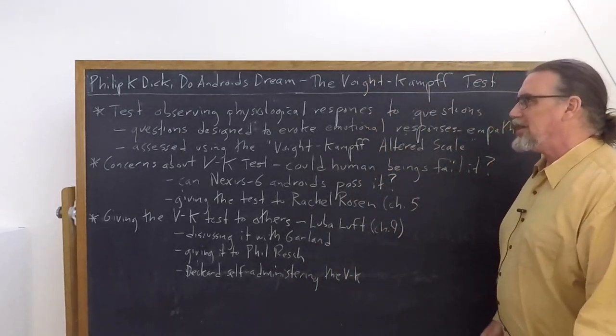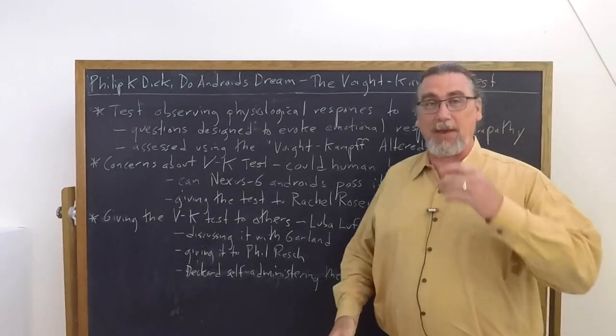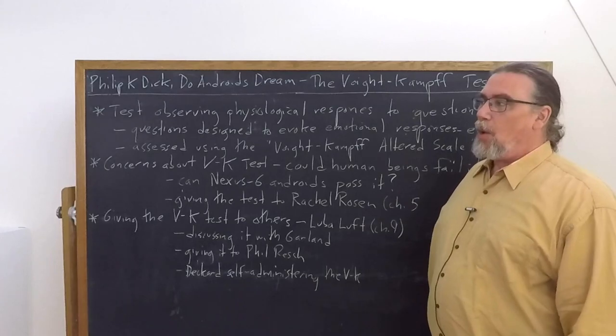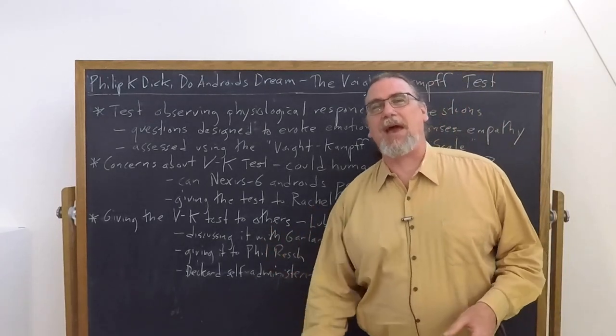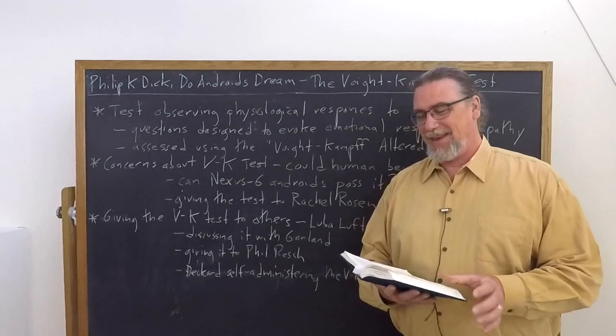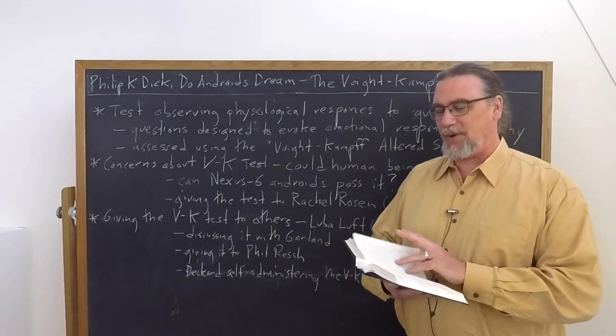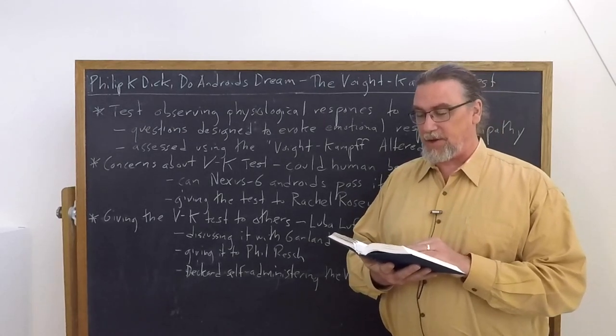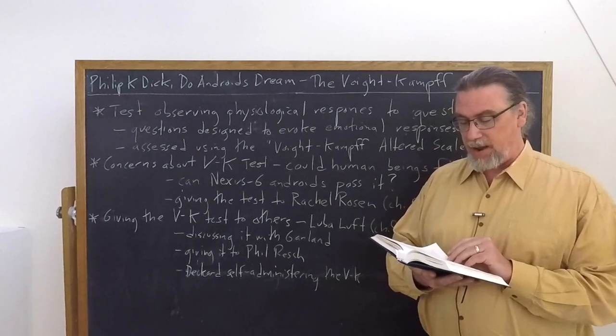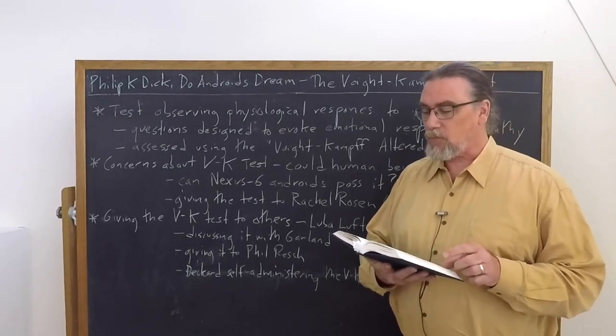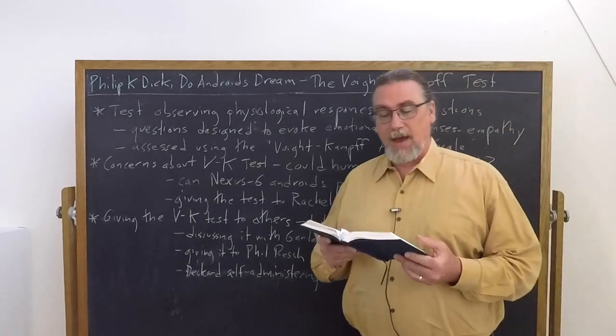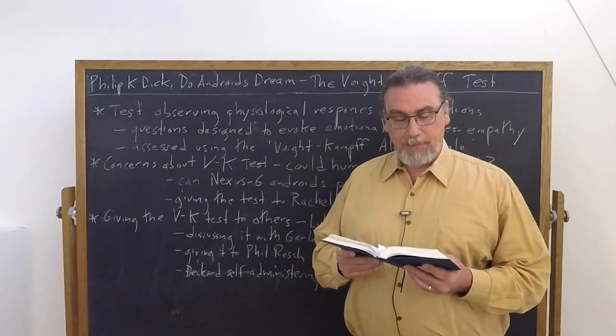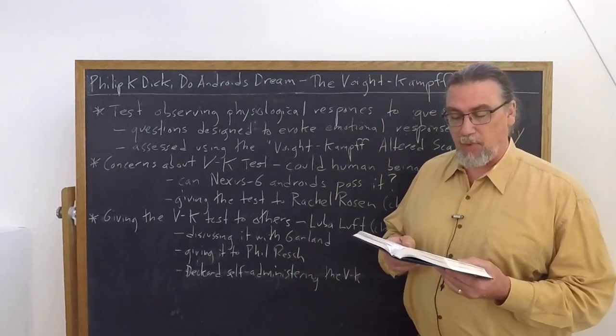And now that's a good lead in to thinking about the concerns about the Voigt-Kampf test. What are the concerns? Well, what if a human doesn't pass the test? And this comes up in sort of a hypothetical way early on in a discussion between Deckard and Bryant. So this is in that passage that we were looking at from chapter four. And he says, this is Bryant.